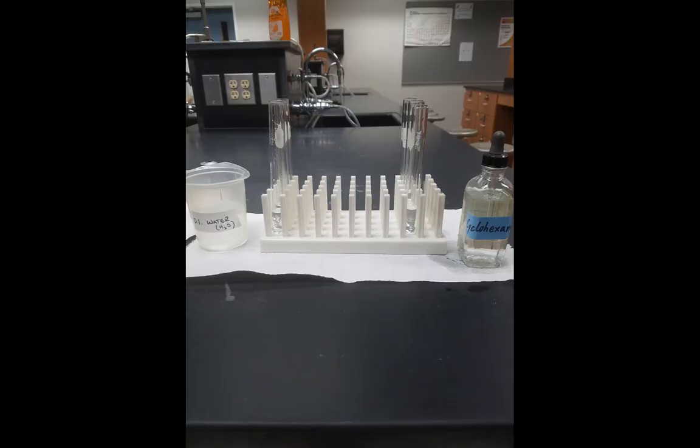In this experiment, we're going to be using a total of eight test tubes. Four test tubes on the left will be filled with DI water and the four test tubes on the right will be filled with the nonpolar cyclohexane. Each of these test tubes contains about three milliliters of the solvent that we're interested in.